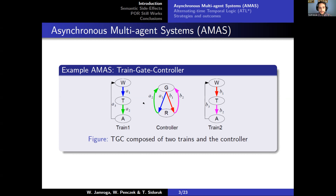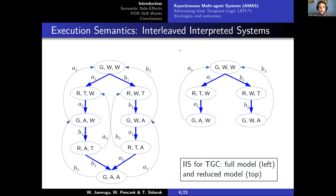This network of automata — this AMS — generates an interleaving interpretive system. I'm not able to go into details, so I'll just say that interleaving systems follow the model of traditional distributed systems and it's rather straightforward. We have global states that are tables of local state transitions that follow from those defining local automata. Each agent has a defined protocol function called the repertoire of choices, which determines which events are available to them in which state. And of course, we add some propositional variables and evaluation over global states.